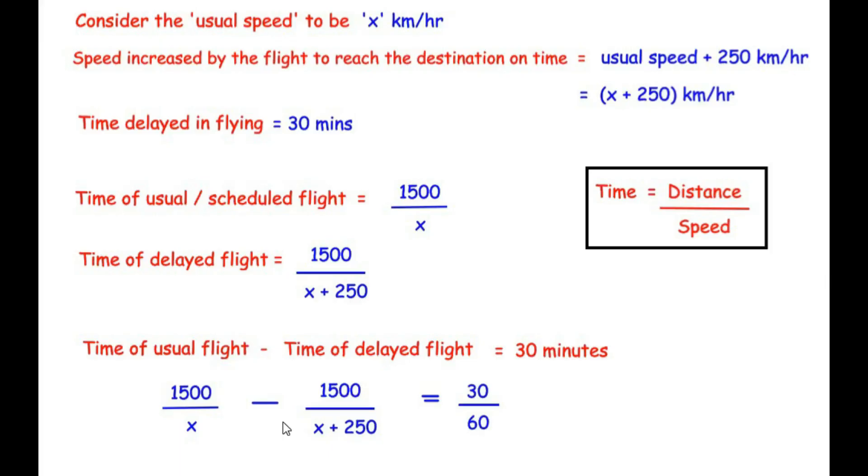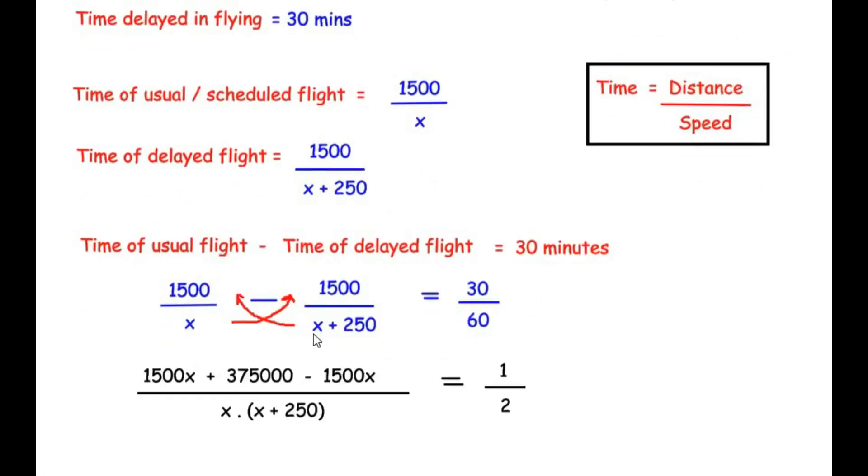The next step is the cross multiplication. That is x plus 250 multiplies with 1500 and x multiplies with 1500. So we get here 1500x plus 1500 times 250 gives us 375,000 minus 1500 times x gives us minus 1500x divided by, now the denominators will multiply together. Now on the right hand side, the 30 divides the 60, that is 1 by 2 and that is what has been written over here. Now if you look at the left hand side, plus 1500x and minus 1500x will cancel out each other. So we are left with only 375,000 in the numerator.